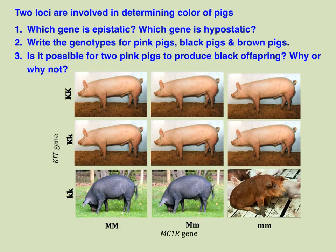Let's consider a pig color problem. We have two genes involved in determining pig color: a gene called MC1R and a second gene called KIT. Both MC1R and KIT can have two alleles — dominant and recessive — giving three possible genotypes: homozygous dominant, heterozygous, and homozygous recessive. The question is: which gene is epistatic — KIT or MC1R — and which is hypostatic?